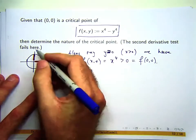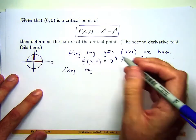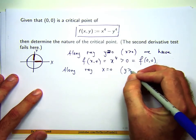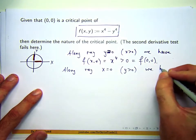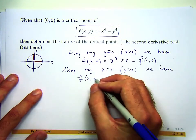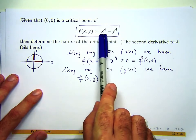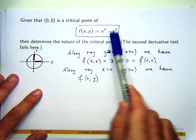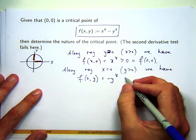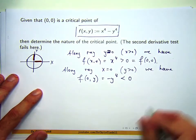So let's go along this one now. That's along the ray x equals zero with y positive. We have the following: I'll replace x with zero up here, and I'm going to get negative y to the power of four. Now, as long as y is not zero, that's always negative.